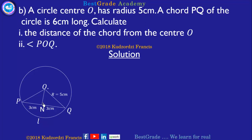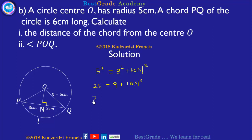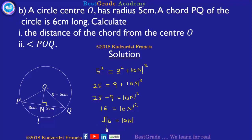Now we have a circle with centre O and radius 5 centimeters. The length of the chord PQ is 6 centimeters, so half of PQ is 3 centimeters. We use the Pythagorean theorem to find the distance of the chord from the centre: 5 squared equals 3 squared plus ON squared, giving 25 equals 9 plus ON squared, so 25 minus 9 equals ON squared, which is 16. Taking the positive square root gives ON equals 4 centimeters.